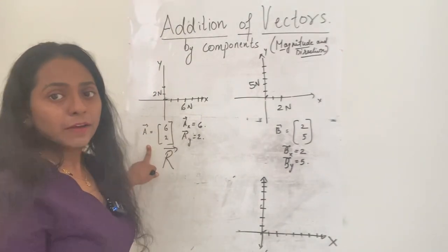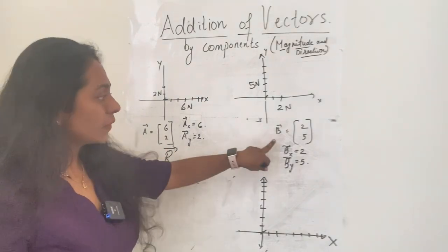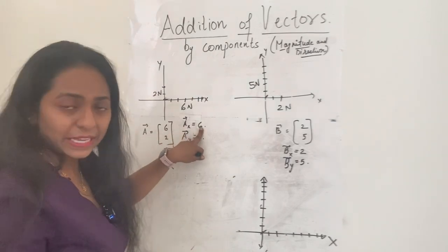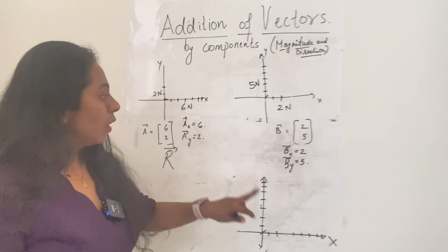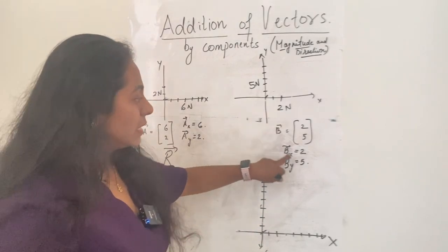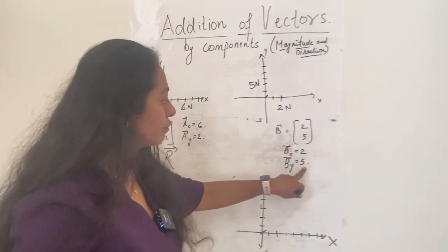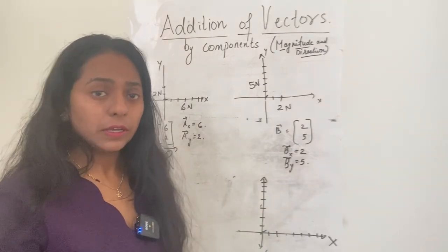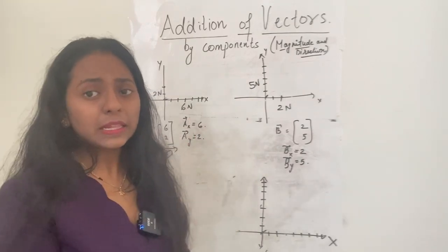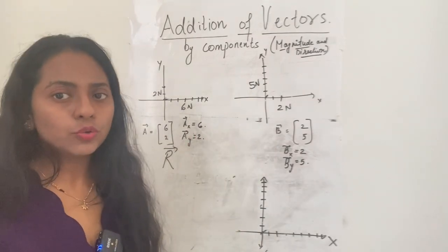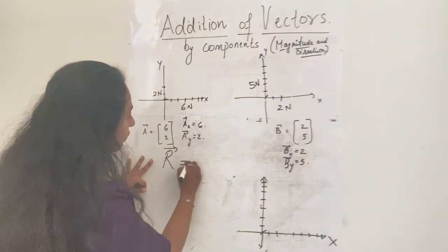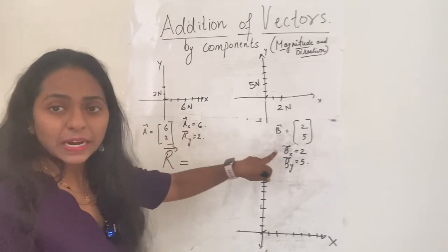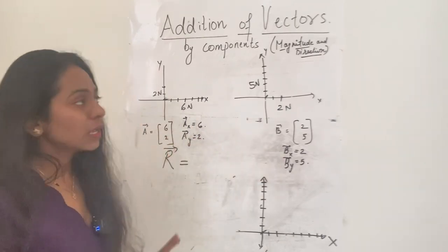Here I have two vectors: vector A and vector B. Vector A has an x-component of 6 and a y-component of 2. Vector B has an x-component of 2 and a y-component of 5. Even if given in magnitude form, you can convert to x and y components, which makes it very easy to add. To calculate the resultant vector, we add the x-components of both vectors and the y-components of both vectors.